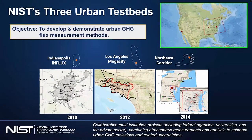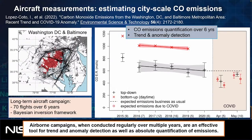We've developed three urban test beds across the United States: one around Indianapolis, one in the Los Angeles megacity area, and a regional test bed in the northeastern United States focused on Washington D.C. and Baltimore. These are like laboratories where we can test different types of methods and measurements, with a backbone of dense permanent sites that continuously observe CO₂ and methane with great accuracy and precision.